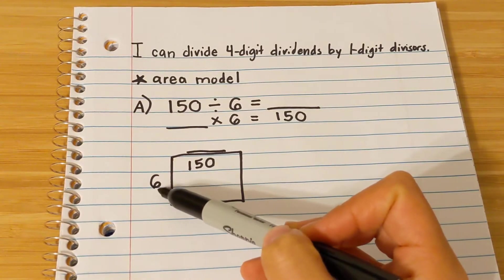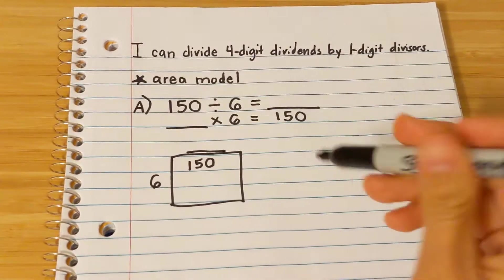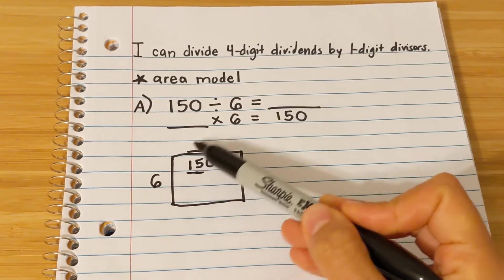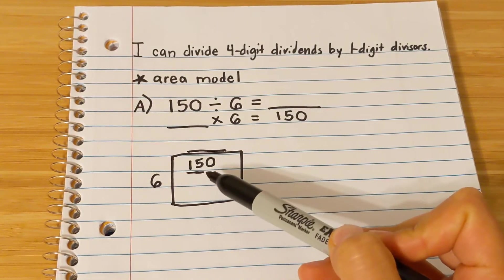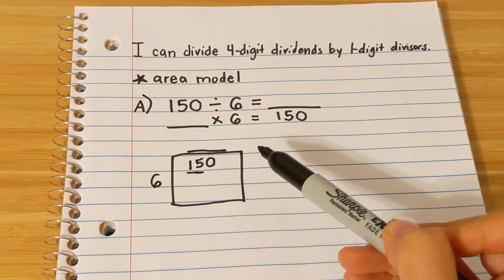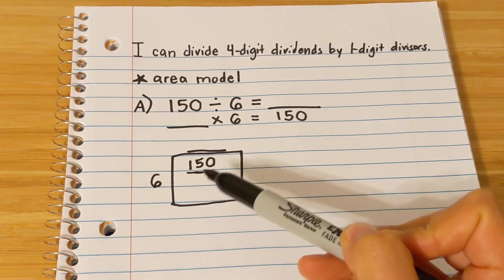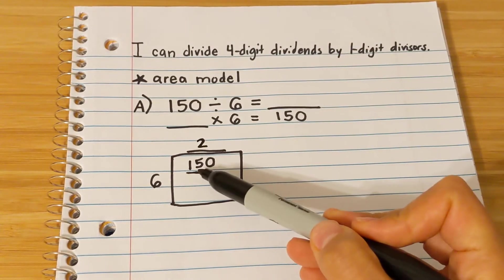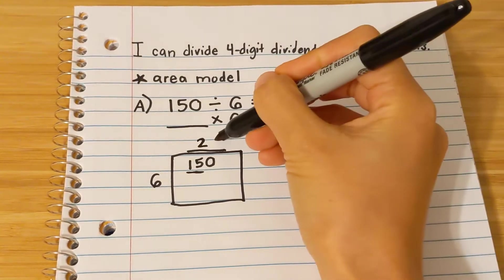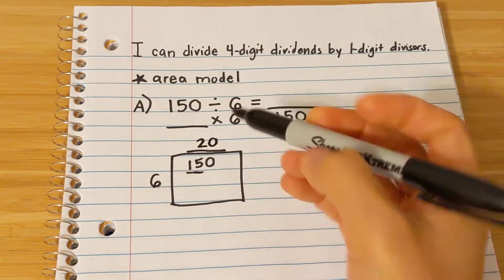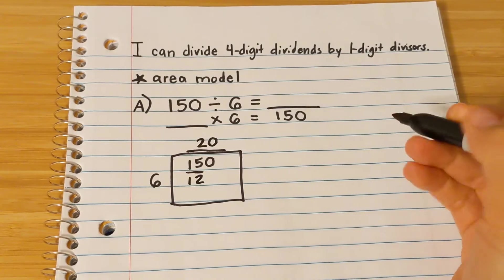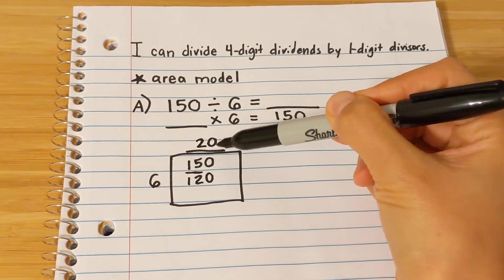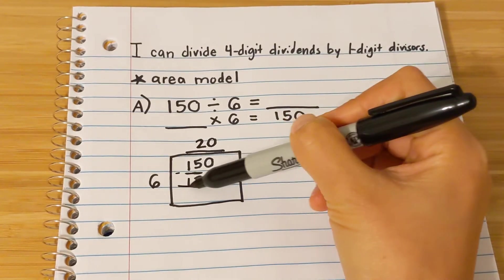The first thing I like to do is think: 6 times what equals 150? That can be kind of vague and ambiguous, so just look at smaller chunks of the number. Look at the first two digits: 6 times what is close to 15? Multiples of 6 — 6, 12, 18. 18 is greater than 15, so go below that, which is 12. But I'm not looking at 12 — look at the larger value. I'm looking at 150, so I add on that zero. 20 times 6 is 120. I'm taking out 20 groups of 6. This first number is a factor, but it's also considered my partial quotient.